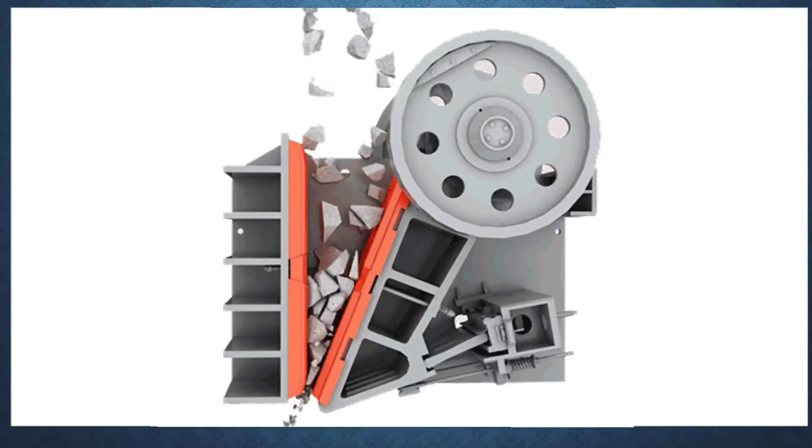Friction reduces the efficiency of machines. Some of the force applied to run a machine is wasted in overcoming the friction between its moving parts. This reduces the efficiency of the machine. For this reason the efficiency of machine is always less than 100%. Understood?